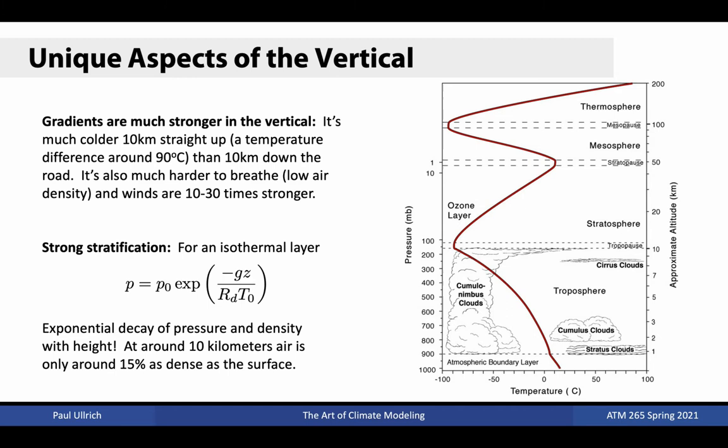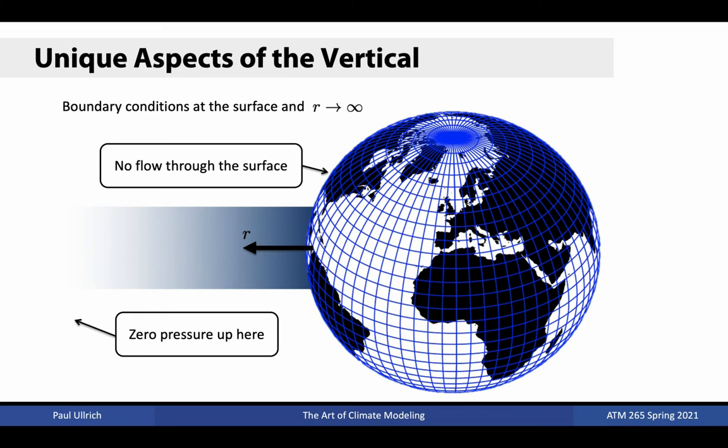Differences in both dynamic and thermodynamic quantities occur over relatively short distances in the vertical. For example, in just the lower 10 kilometers of the atmosphere, temperature varies from around 15 degrees Celsius at the surface to minus 80 degrees Celsius at the tropopause. Air density also drops off exponentially and winds increase rapidly, reaching speeds of 100 meters per second or more in spots.